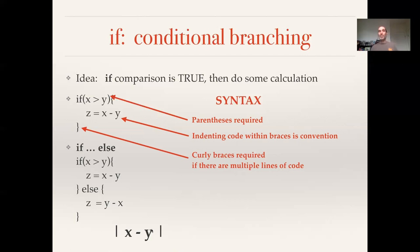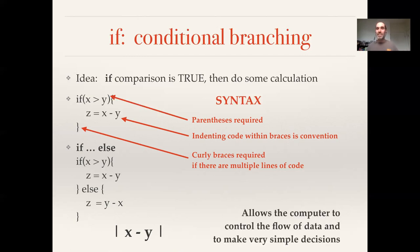And so this little bit of conditional branching actually allows me to have reinvented the idea of absolute value. So if x is bigger than y, I subtract y off x. If y is bigger than x, I subtract x off y. So I'm doing the difference and always ending up with a positive number—so the distance between x and y. So this idea of conditional branching is going to ultimately allow the computer to control the flow of data and to make simple decisions based on those data.